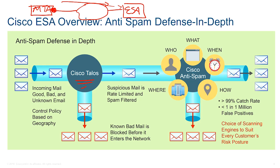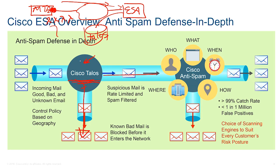If Talos tells us that a particular sender with that IP address is known to be a spammer, your ESA can decide to drop that message right away, or drop the connection entirely. If the sender has a neutral reputation, we could do throttling — accept the connection but apply additional checks. If the sender's IP address is completely unknown to Talos — never heard anything good or bad about it — that email survives the first check and moves on.